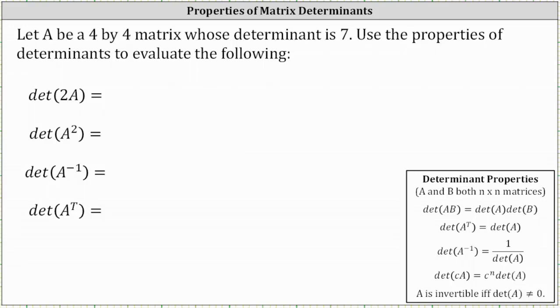Let A be a four by four matrix whose determinant is seven. Use the properties of determinants to evaluate the following. The determinant properties shown below are both valid for A and B being n by n matrices. Since our matrix A is a four by four matrix, we know n is equal to four, and we know the determinant of matrix A is equal to seven.